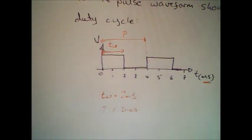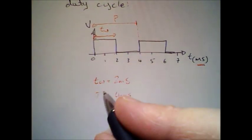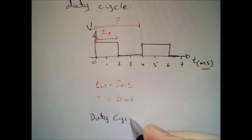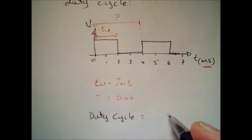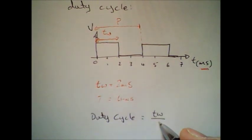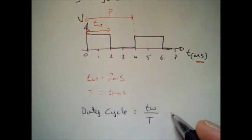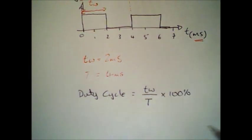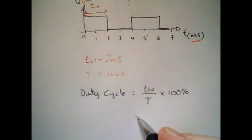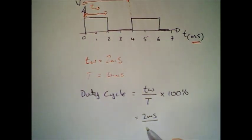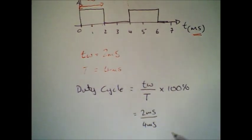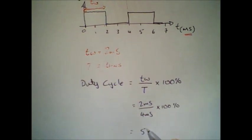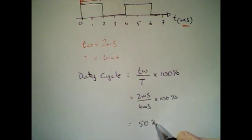So let's change pens. If you look at duty cycle, it equals tw over T multiplied by 100%, which is 2 milliseconds divided by 4 milliseconds multiplied by 100%, which gives you 50%.